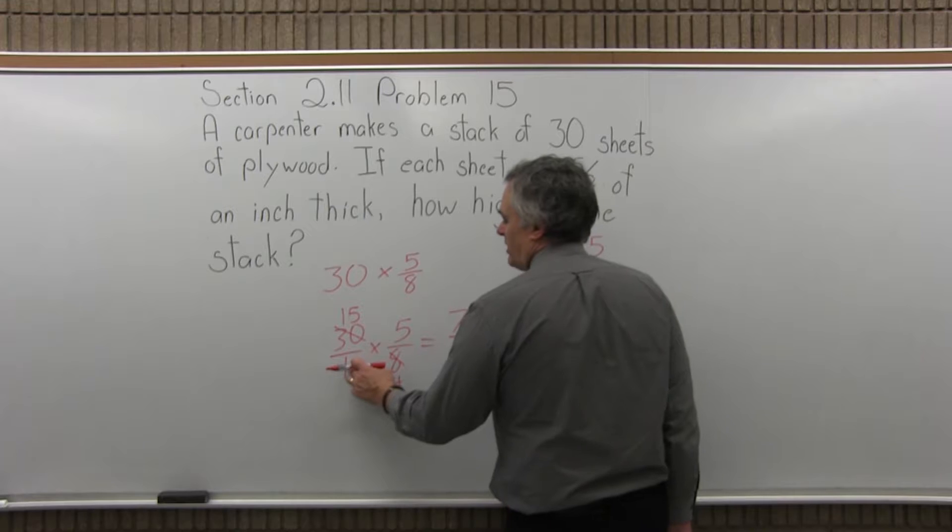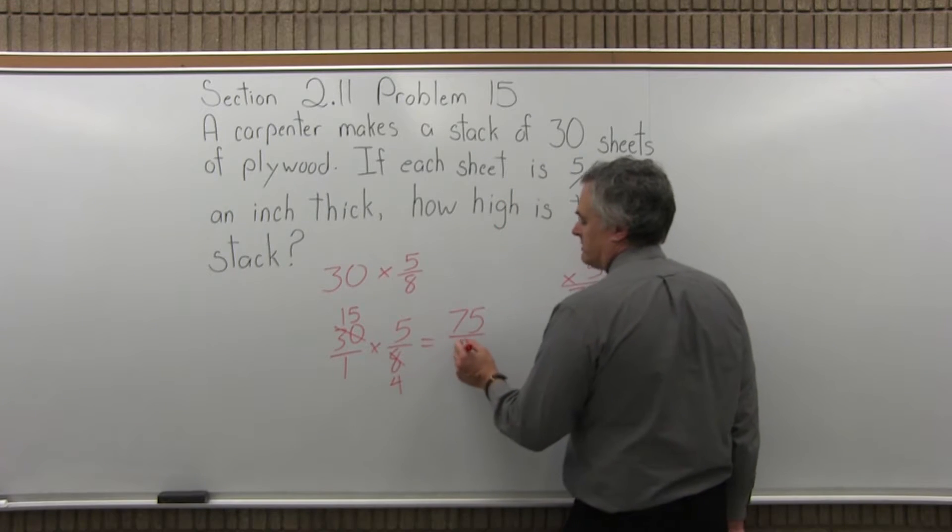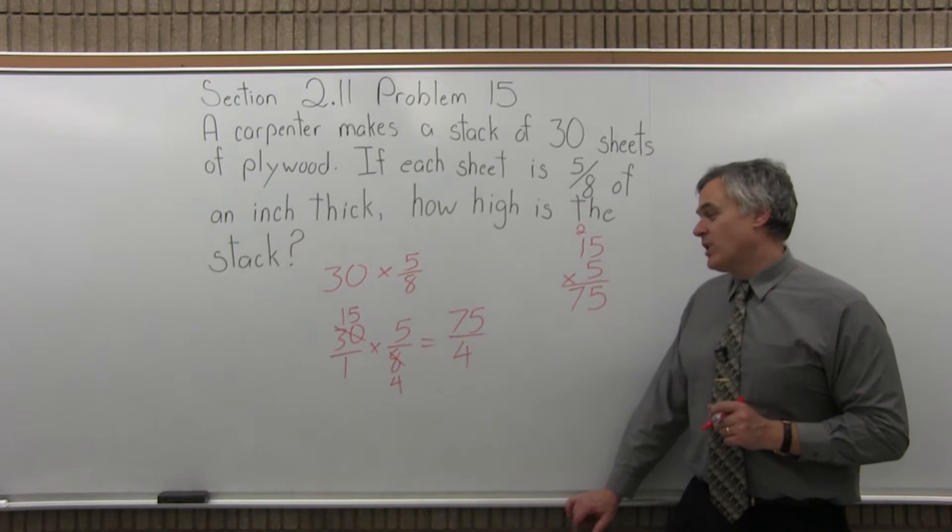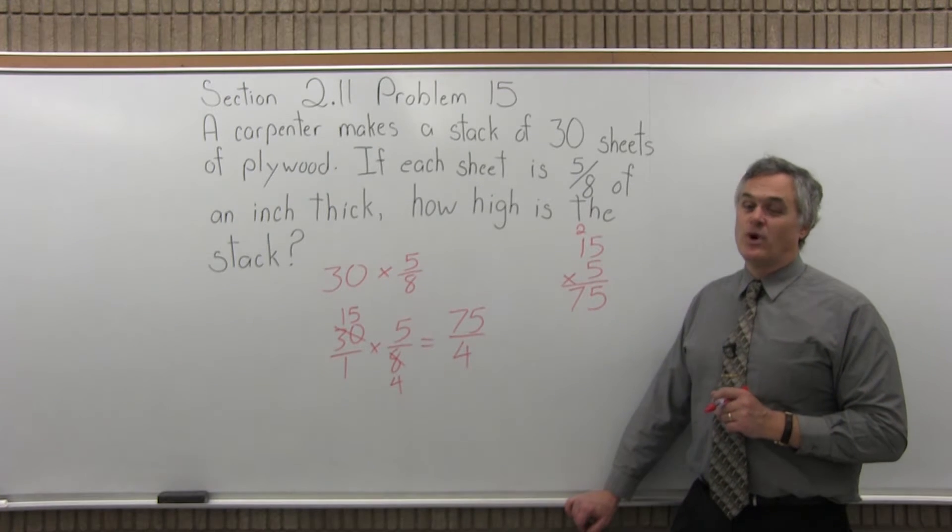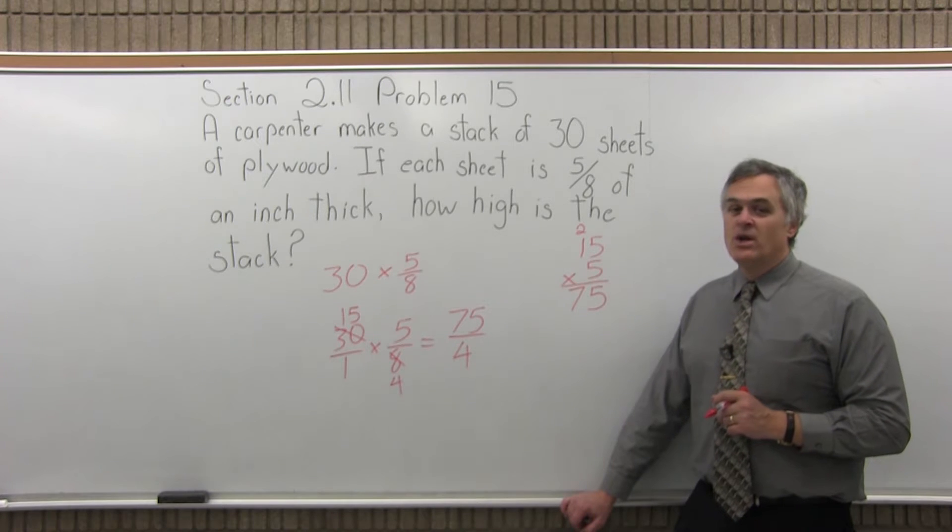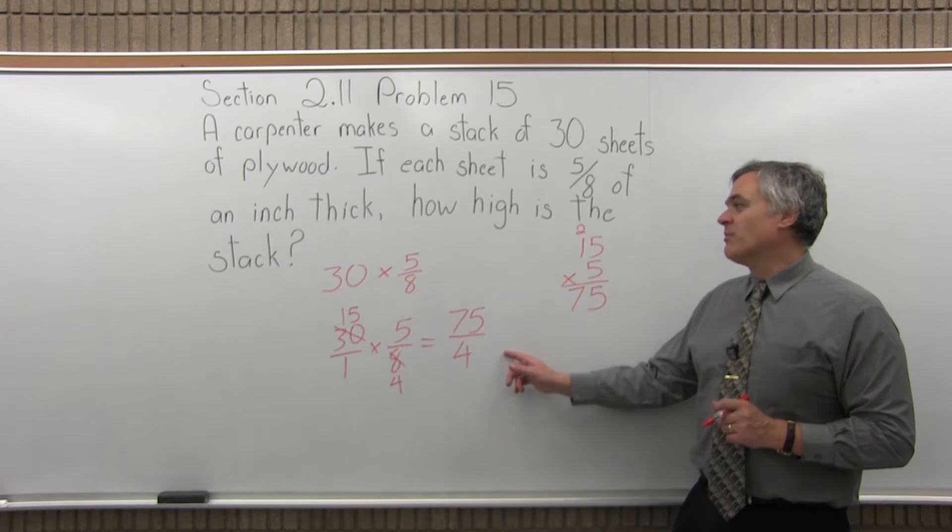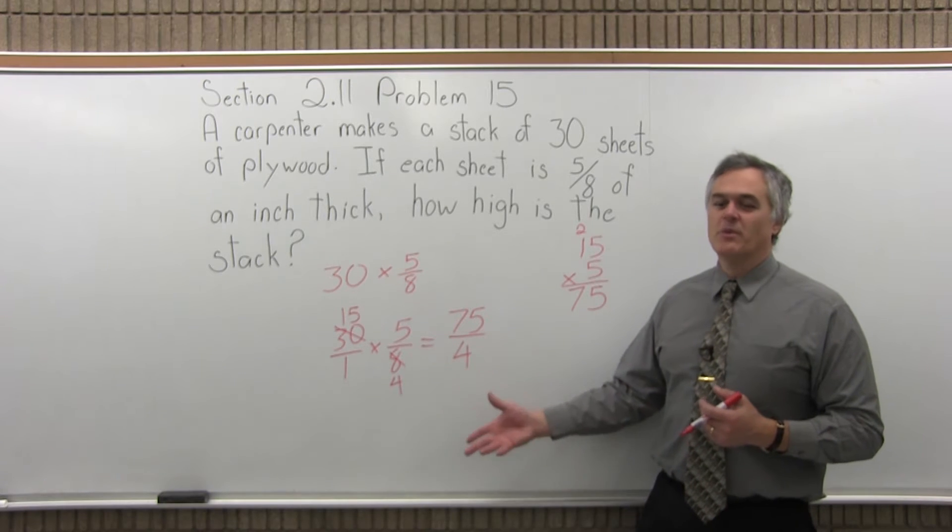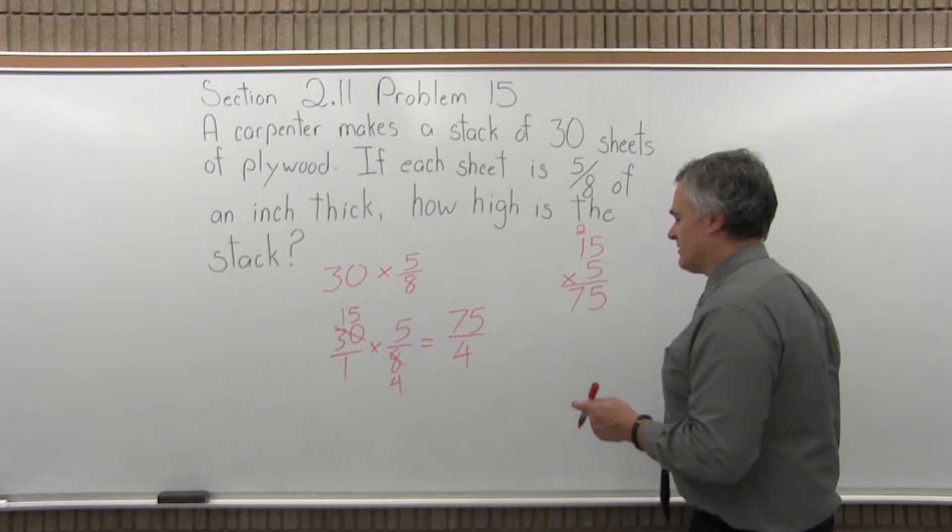Multiply the denominators, 1 times 4, 1 times 4 is 4. So the answer, how high is the stack of plywood is 75 over 4, and that is the answer, but for a problem like this it would look much nicer if we converted the 75 over 4 to a mixed number, which is easy enough to do.